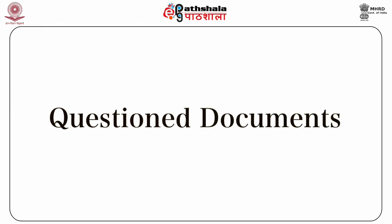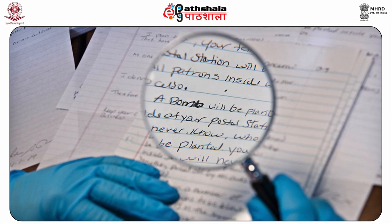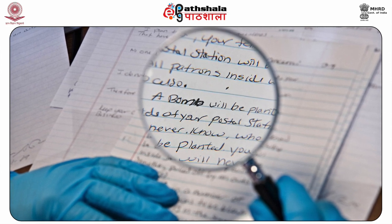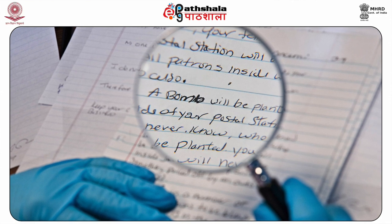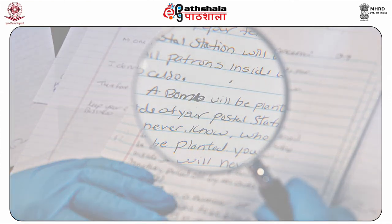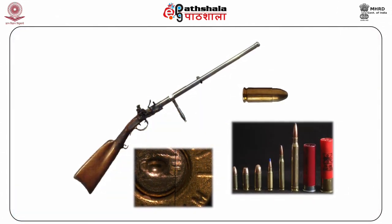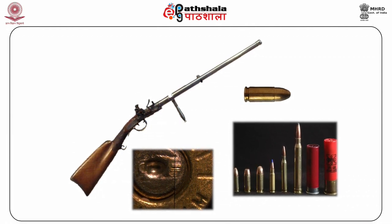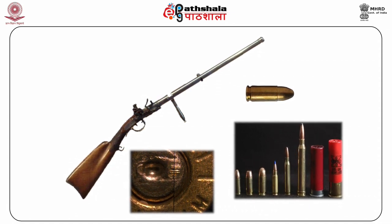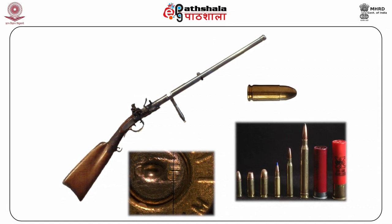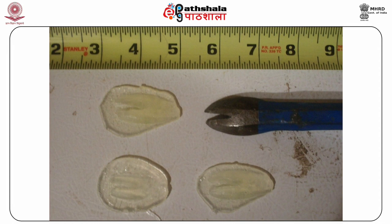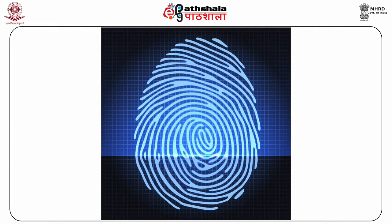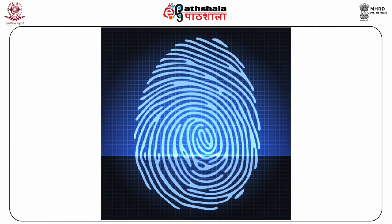Next is questioned document examination, which includes comparison and interpretation of handwriting, mechanically produced material such as typing or printing and photocopied material. Analysis of papers, inks and other materials used to produce documents may also be included. Firearm and toolmark examination has to do with firearm identification, comparison of markings present on bullets and other projectiles, cartridge cases and shell cases, especially for the purpose of determining that a bullet may have been fired from a particular weapon. Toolmark examination is concerned with the association of particular impressions with particular tools.